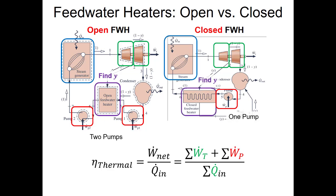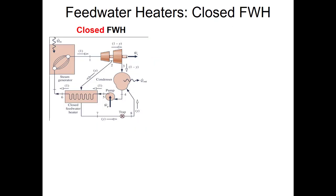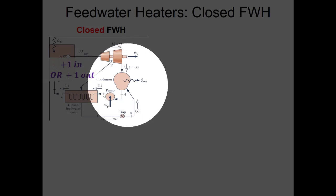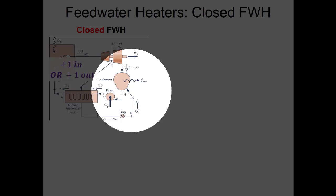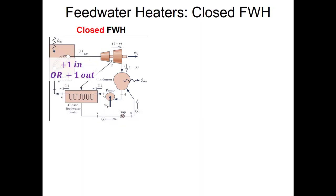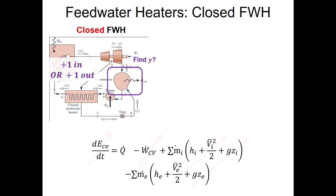My general advice is that if you're looking for a mass flow rate, applying the first law to a heat exchanger is a good idea, since the sum of m-dot-in h-in equals sum of m-dot-out h-out. For closed feed water heaters, we can also find y using the condenser, since that's where all mass flow rates come back together — one stream at y times m-dot-total and one at (1 − y) times m-dot-total.